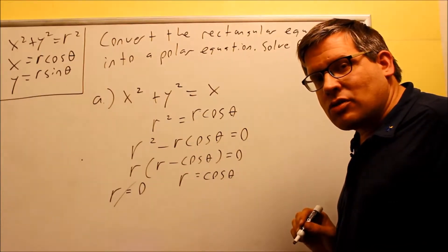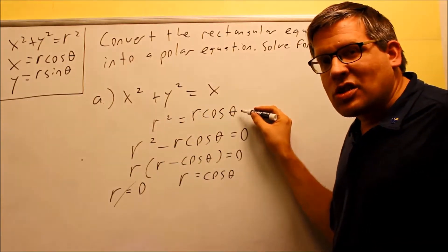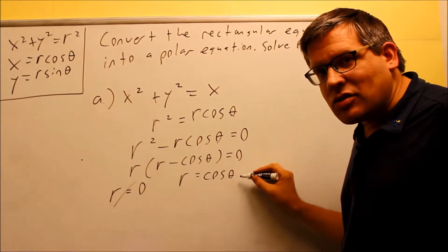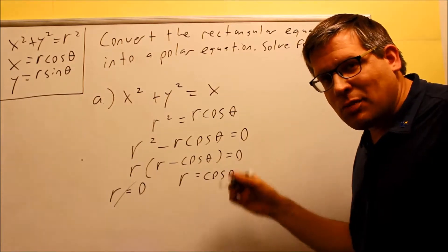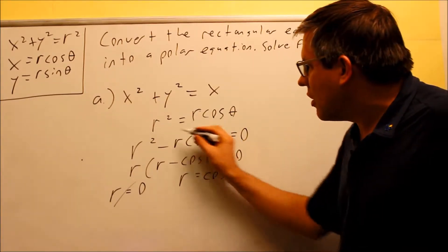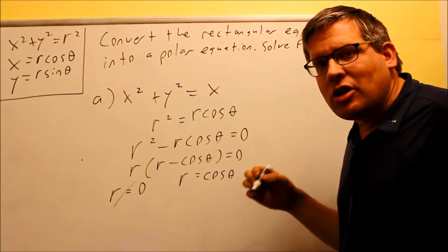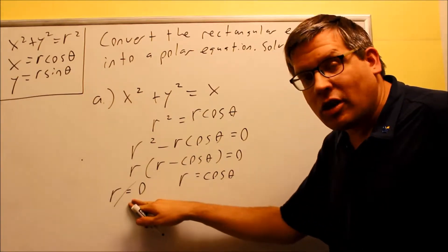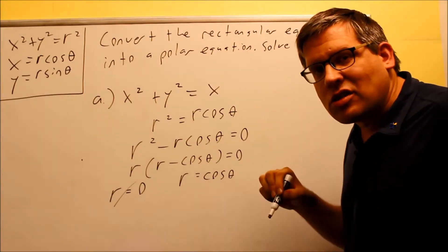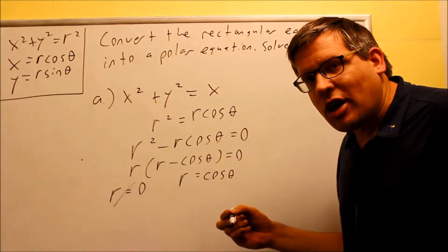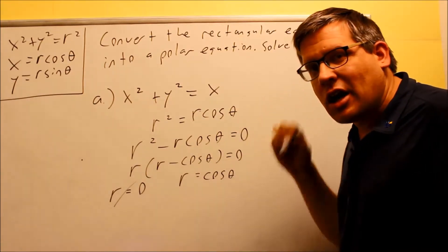You might be thinking: couldn't I just take this equation and divide both sides by r to get the same answer? Yes, you'd get the same result, but that's mathematically not the correct procedure. The reason is that dividing both sides by r means you might be dividing by zero — and in fact, we found that r equals zero is a solution here. So dividing by r means dividing by zero, which is undefined.